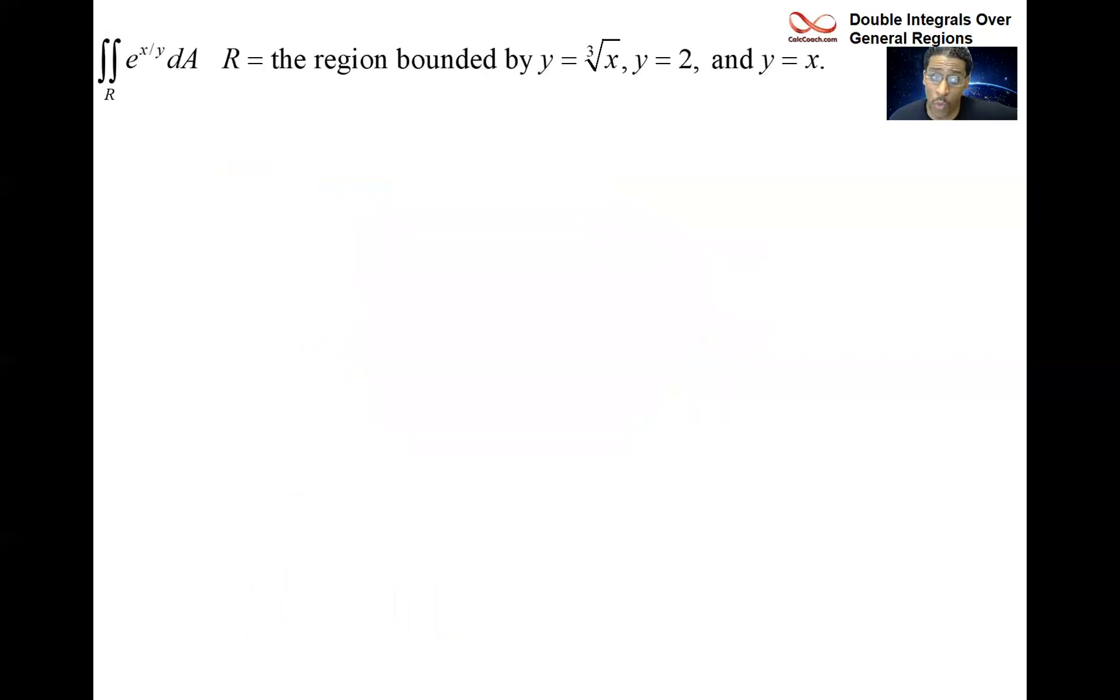Our function is e to the x over y. Our region that we're interested in is the region that's bounded by these three curves, two lines and a curve. We have y equals the cube root of x, y equals two, and y equals x. We'll have the hardest part of this one actually getting the drawing. Y equals the cube root of x is the blue. Y equals x, that's in red. And then in black, we have y equals two.